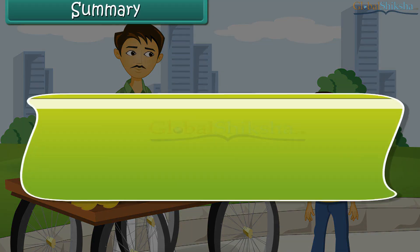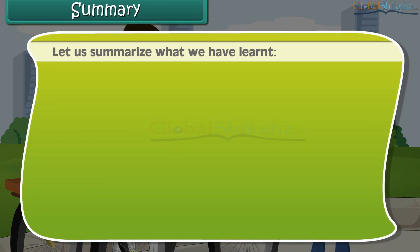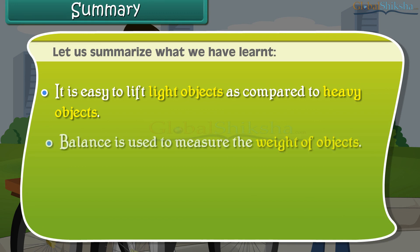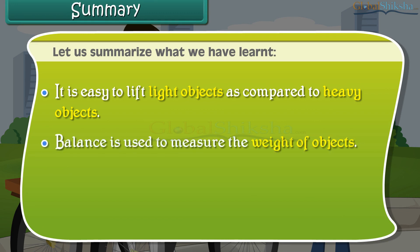Let us summarize what we have learned. It is easy to lift light objects as compared to heavy objects. A balance is used to measure the weight of objects. One kilogram is equal to 1000 grams.